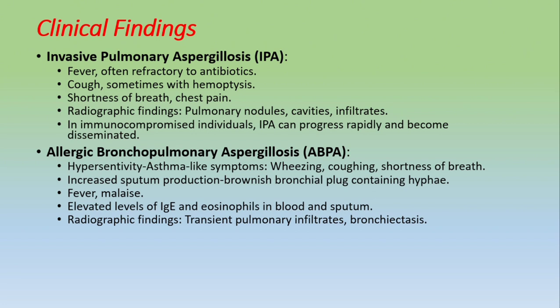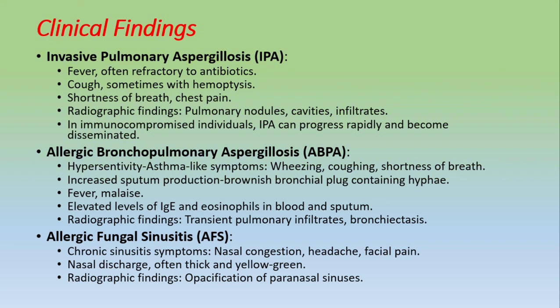Second disease: Allergic Bronchopulmonary Aspergillosis (ABPA) — a hypersensitivity, asthma-like disease. Symptoms include wheezing, cough, and shortness of breath, caused by elevated IgE levels and eosinophilia in the blood. There is also increased sputum production with brownish bronchial plugs containing hyphae, and transient pulmonary infiltrates. Third disease: Allergic Fungal Sinusitis — chronic sinusitis with symptoms of nasal congestion, headache, facial pain, and thick yellow-green nasal discharge. Radiographic findings show opacification of paranasal sinuses.